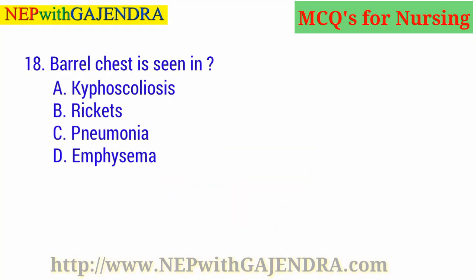Barrel chest is seen in: A. Kyphoscoliosis. B. Rickets. C. Pneumonia. D. Emphysema. The right answer is D: Emphysema.